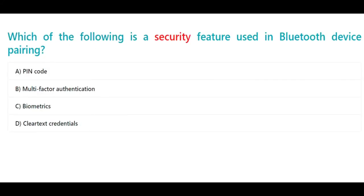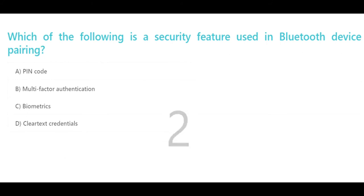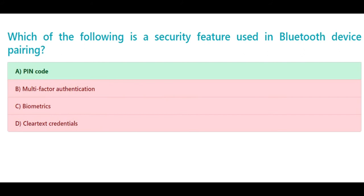Which of the following is a security feature used in Bluetooth device pairing? a. PIN code, b. Multi-factor authentication, c. Biometrics, d. Clear text credentials. The correct answer is a. PIN code.